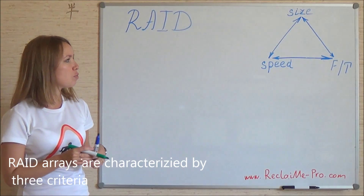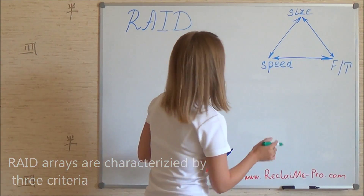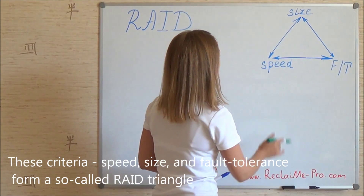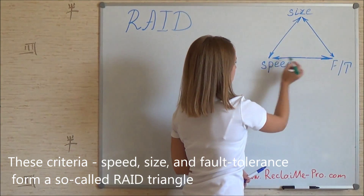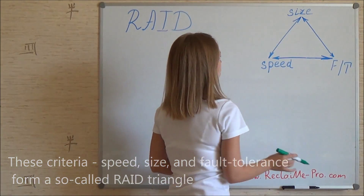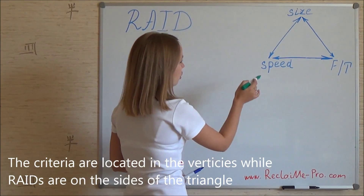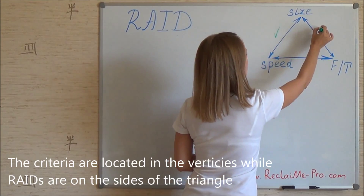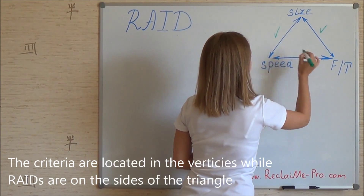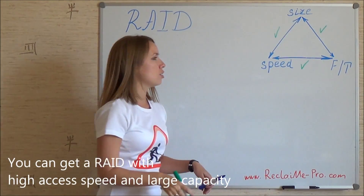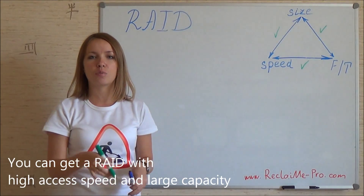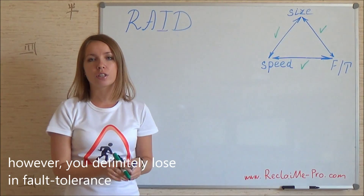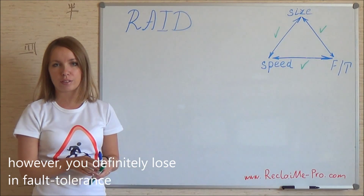A RAID array is characterized by 3 criteria: speed, size, and fault tolerance, which form the so-called RAID triangle. These criteria are located at the vertices while RAIDs are located on the sides of this triangle. For example, you can get a RAID with high access speed and large capacity, however you definitely lose in fault tolerance.